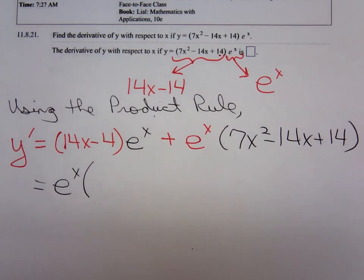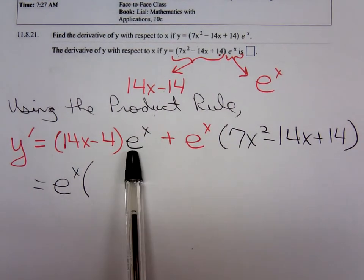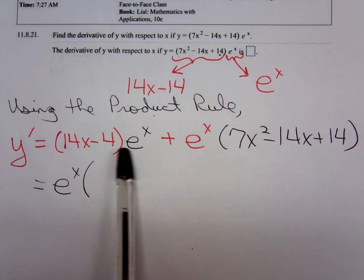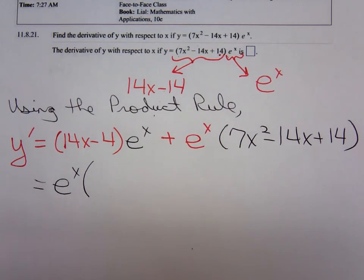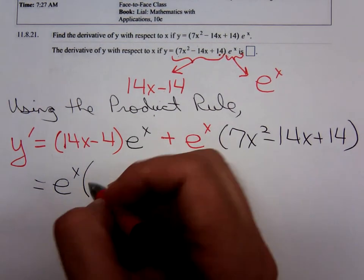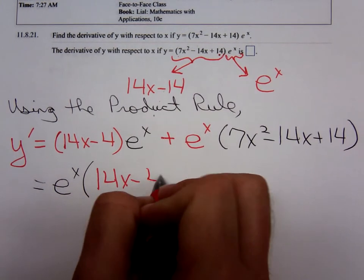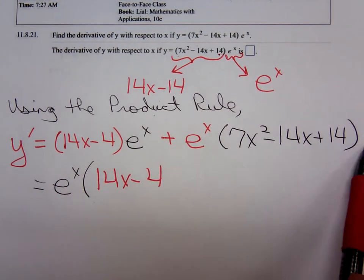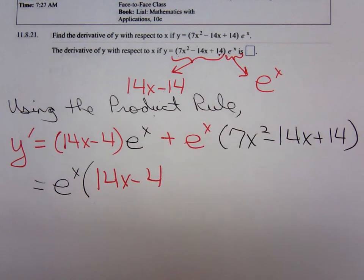This is going to reduce very nicely. We took out e to the x here. What have we got left in the first term? 14x minus 14. We took out e to the x over here. What have we got left?